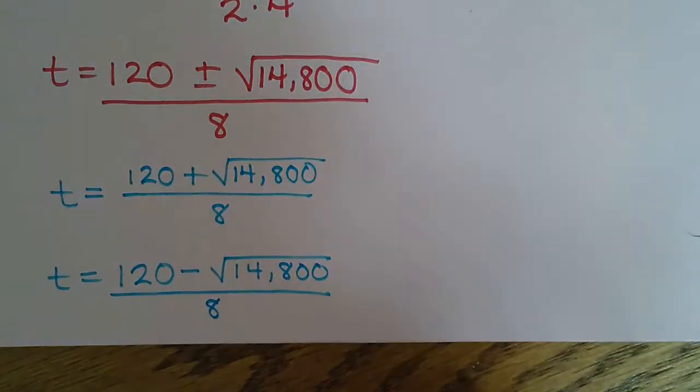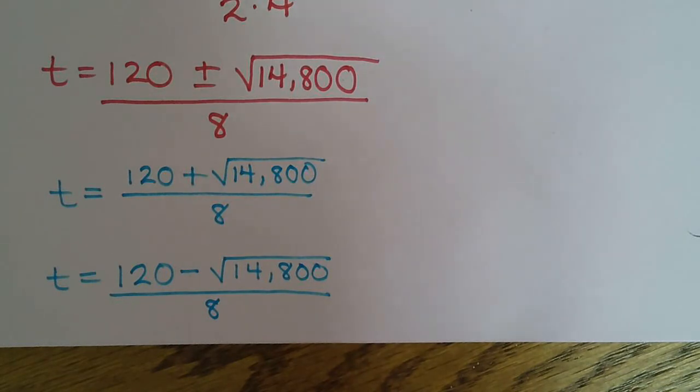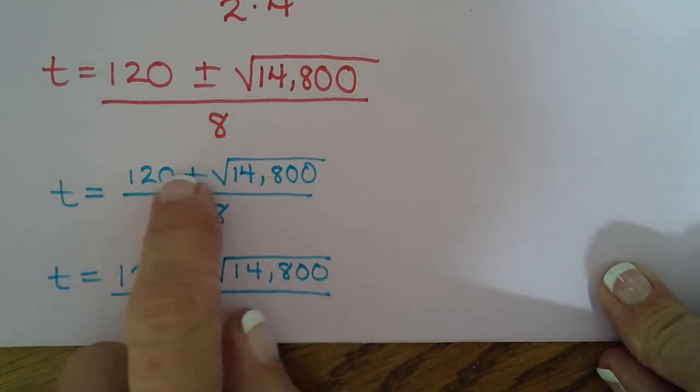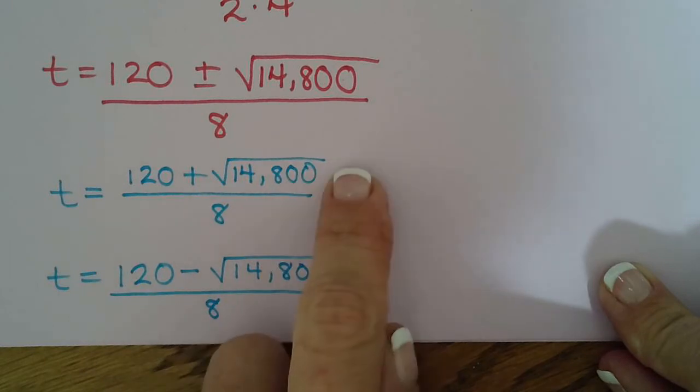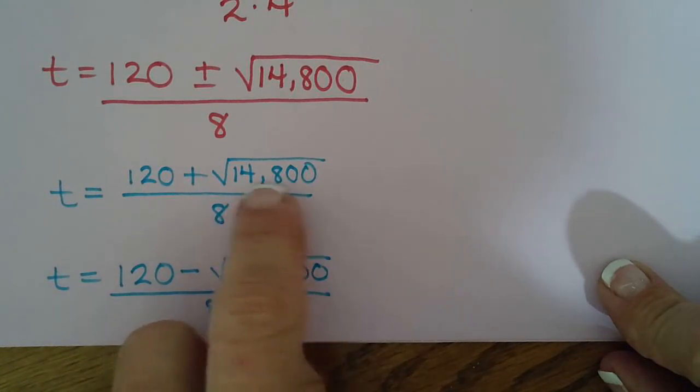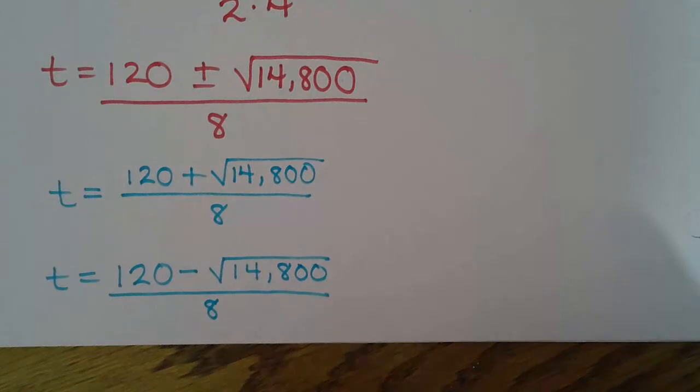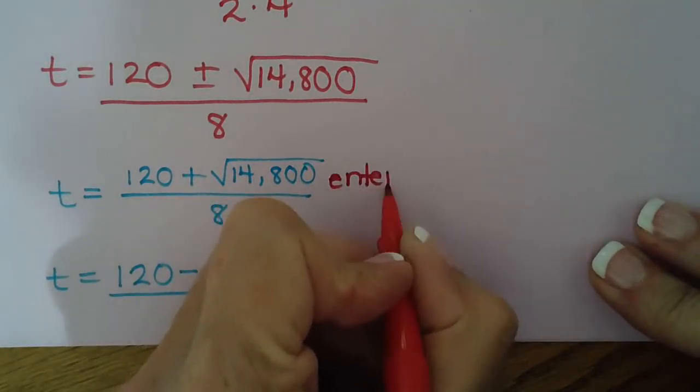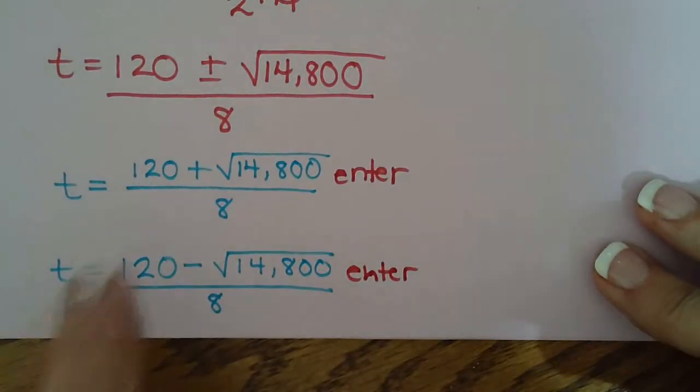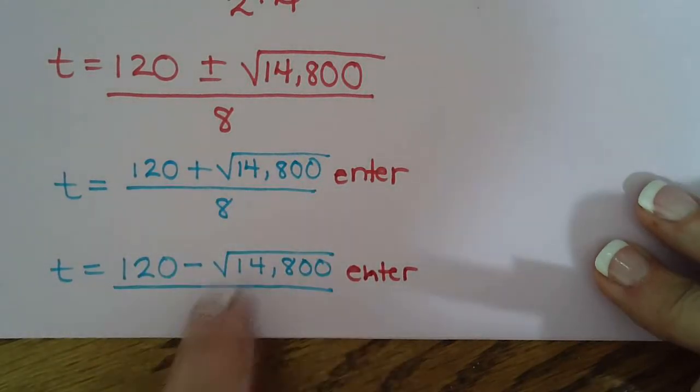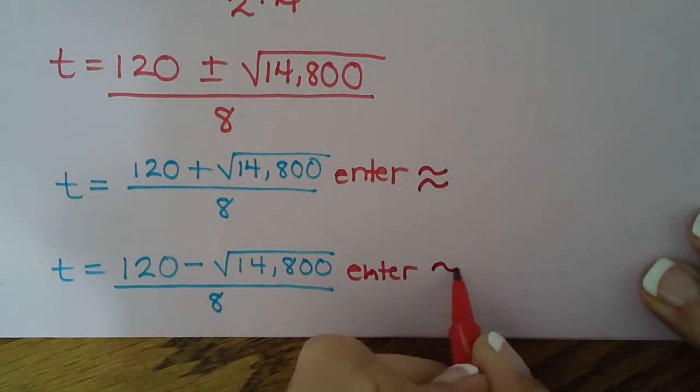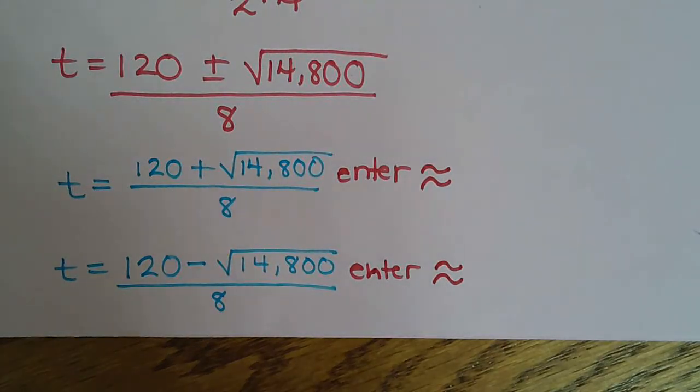Most people that miss this problem miss it on the next step. There's two terms up here. And in order to have 8 be divided into their sum, you have to hit enter at the end. If you do 120 plus square root 14,800 divided by 8, the only thing that gets divided by 8 is the last thing you type in. So I always like to write a reminder right here to tell me, oh, don't forget to hit enter. That way it totals up the top. And then when you hit divided by 8, it's going to take the whole total divided by 8, not just the last number you typed in.